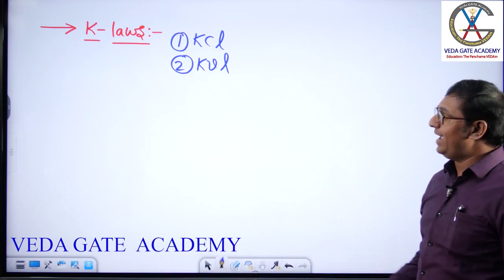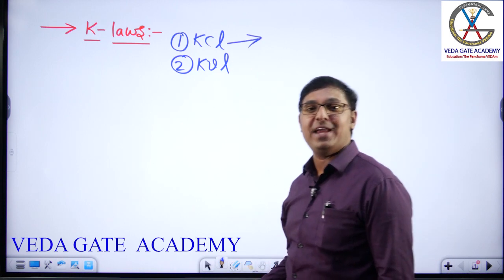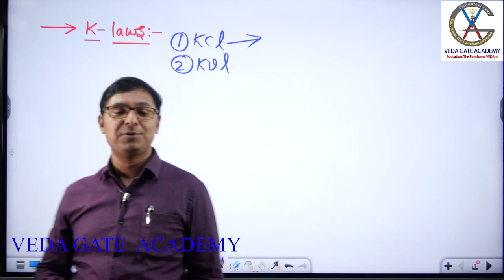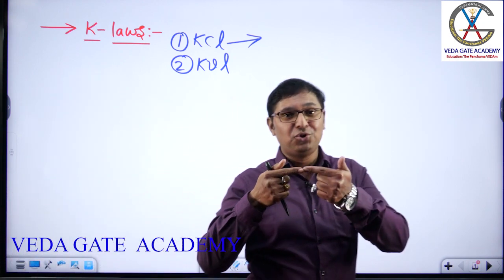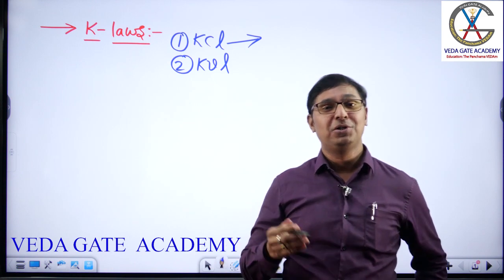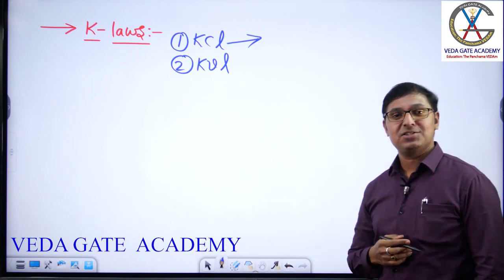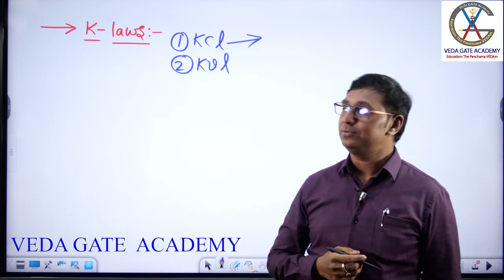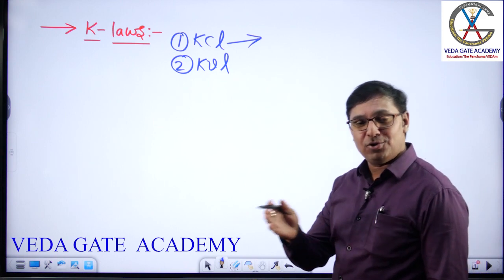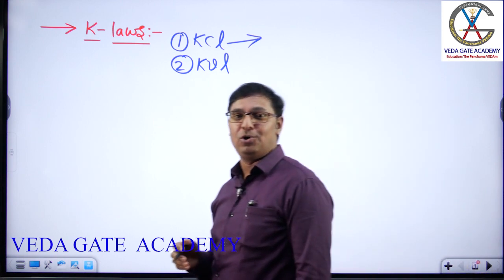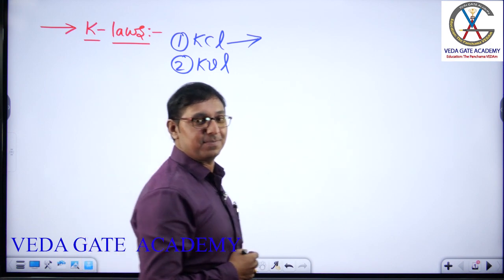Coming to KCL — it is applicable at a node. What types of nodes do we have? Simple node and principal node. A simple node is the interconnection of only two branches. A principal node is the interconnection of more than two branches. All simple nodes are principal nodes, but all principal nodes are not simple nodes.